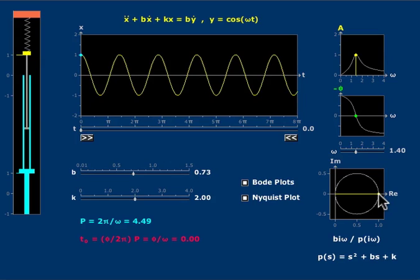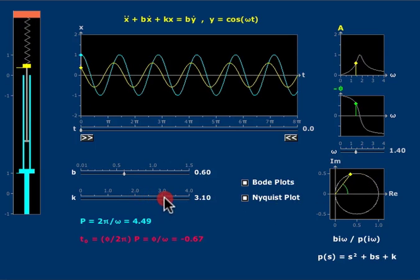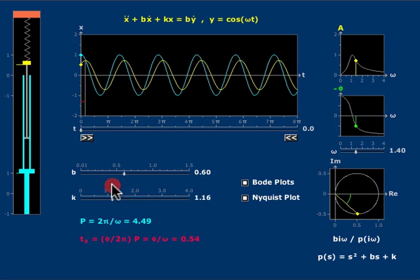This trajectory is independent of both of the system parameters. If I change them, many things change, but the shape of this trajectory, the Nyquist plot, is independent of those two system parameters. And in fact, it's a circle of radius one-half and center one-half. You can verify that by calculation as well.